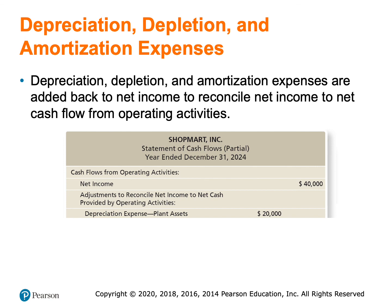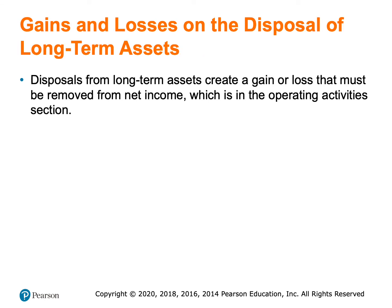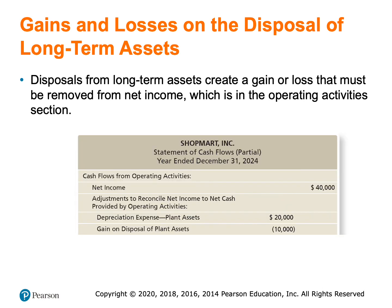Now I look for any gains or losses in the other revenues and gains section of the income statement. I see a gain of $10,000. Since that was originally added on the income statement, I want to subtract it now — put it in parentheses. I didn't have any losses; if I did have a loss, I would add it. When I get to the investing section, I'll deal with this $10,000 gain there.